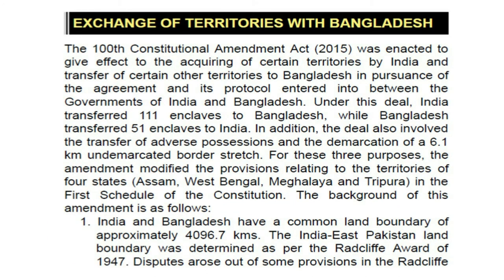Exchange of territories with Bangladesh: The 100th Constitutional Amendment Act, 2015, was enacted to give effect to the acquiring of certain territories by India and transfer of certain other territories to Bangladesh in pursuance of the agreement and its protocol entered into between the governments of India and Bangladesh. Under this deal, India transferred 111 enclaves to Bangladesh, while Bangladesh transferred 51 enclaves to India. In addition, the deal also involved the transfer of adverse possessions and the demarcation of a 6.1 km undemarcated border stretch. For these three purposes, the amendment modified the provisions relating to the territories of four states — Assam, West Bengal, Meghalaya and Tripura — in the first schedule of the Constitution.